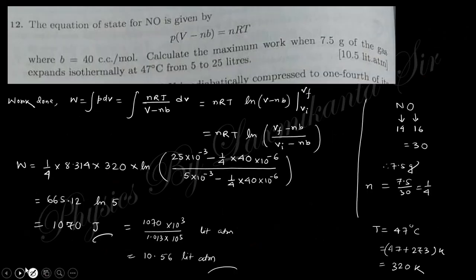The equation of state of nitrogen oxide is given with constant b. Find maximum work done when 7.5 g of gas expands isothermally at 47°C from 5 to 25 liters. W = ∫p·dV, with p = nRT/(V - nb). Integrating gives W = nRT·ln[(V_f - nb)/(V_i - nb)]. Here n = 7.5/30 = 1/4 mol (molar mass ~30), T = 320 K. Converting b from cc to m³ and computing gives the work in joules and liter-atmospheres.